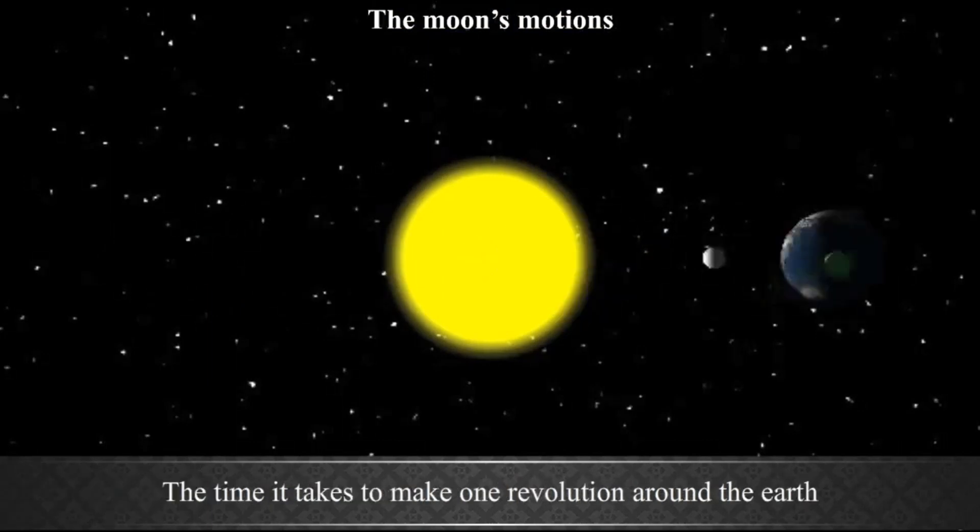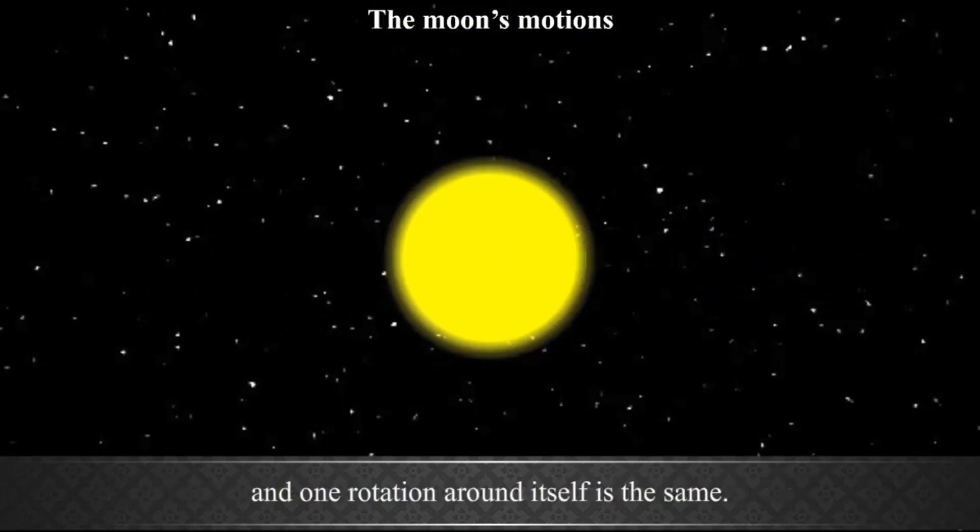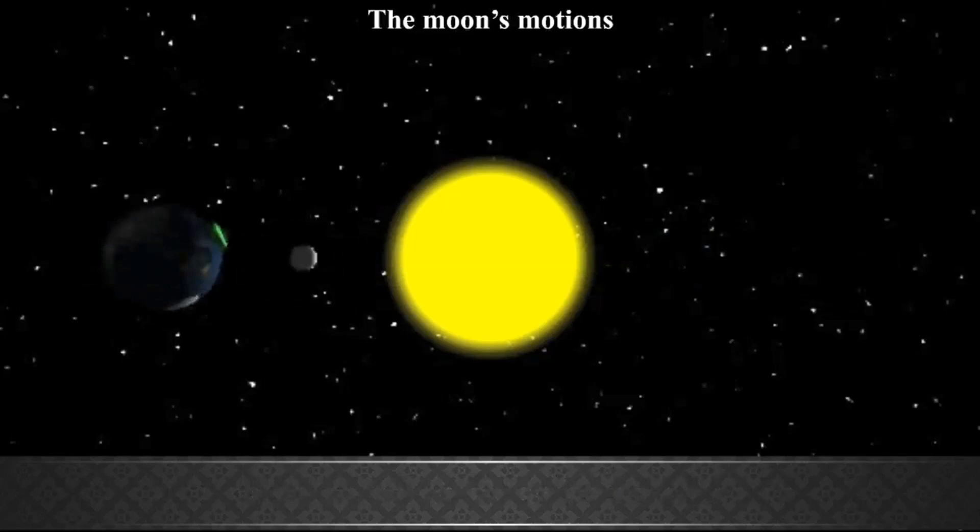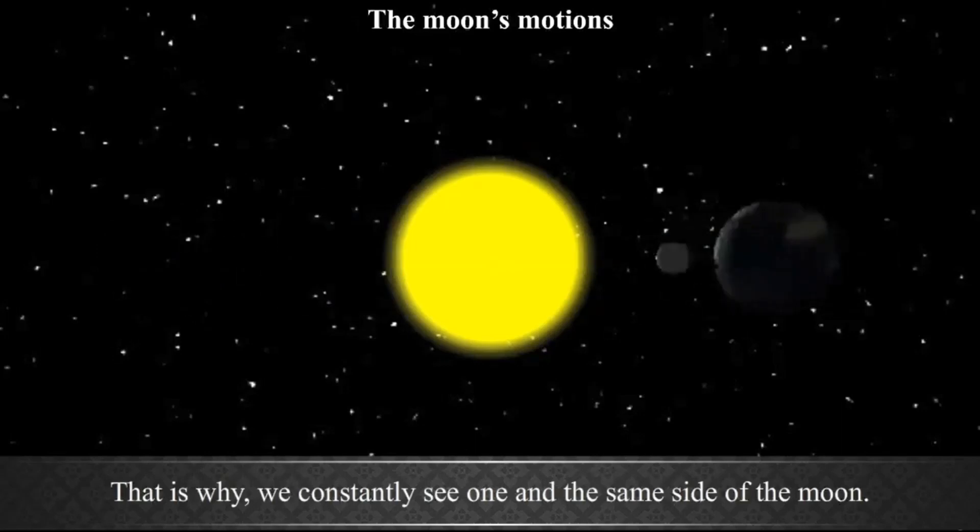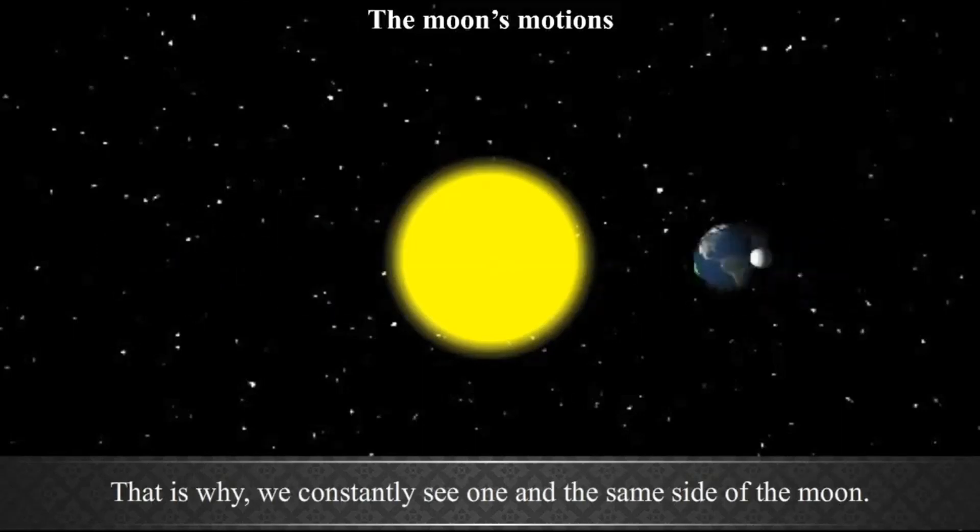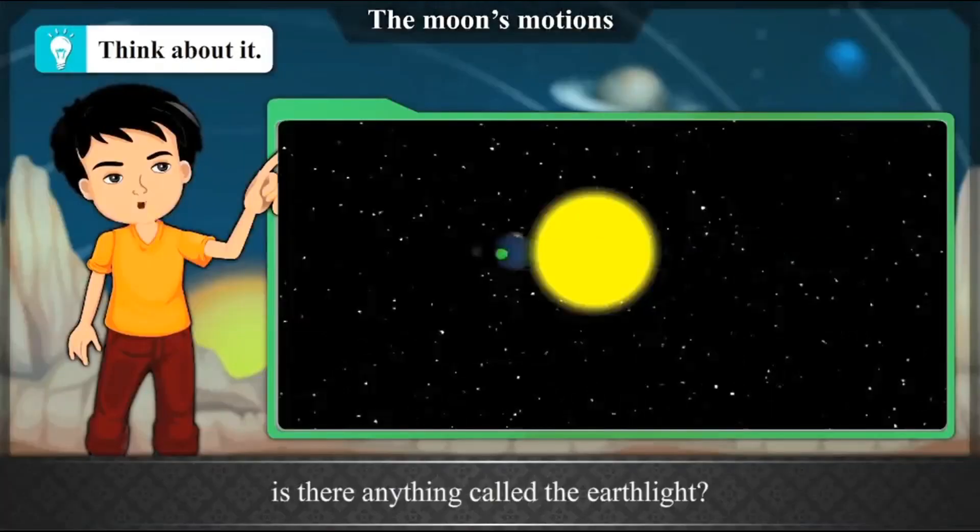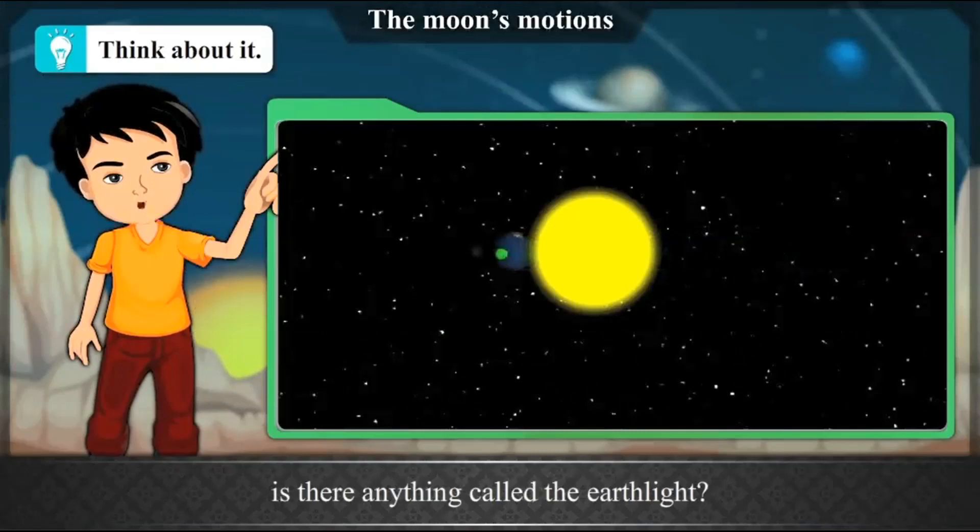The time it takes to make one revolution around the Earth and one rotation around itself is the same. That is why we constantly see one and the same side of the moon. Think about it. Like sunlight and moonlight, is there anything called the Earth light? If yes, where do you think it is found?